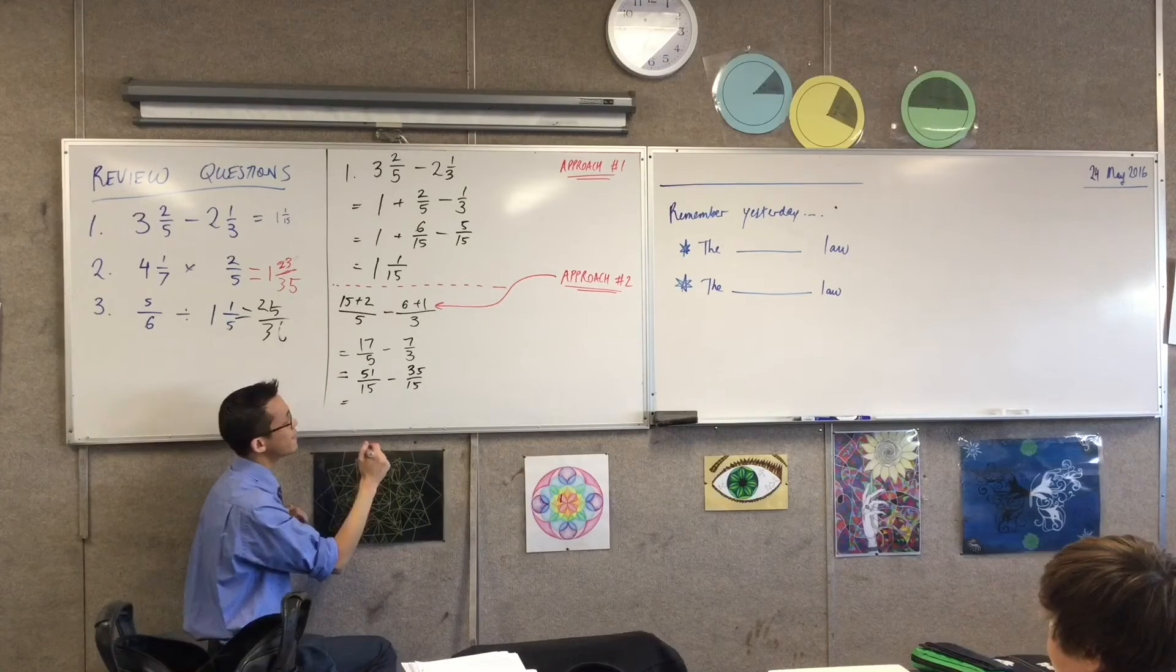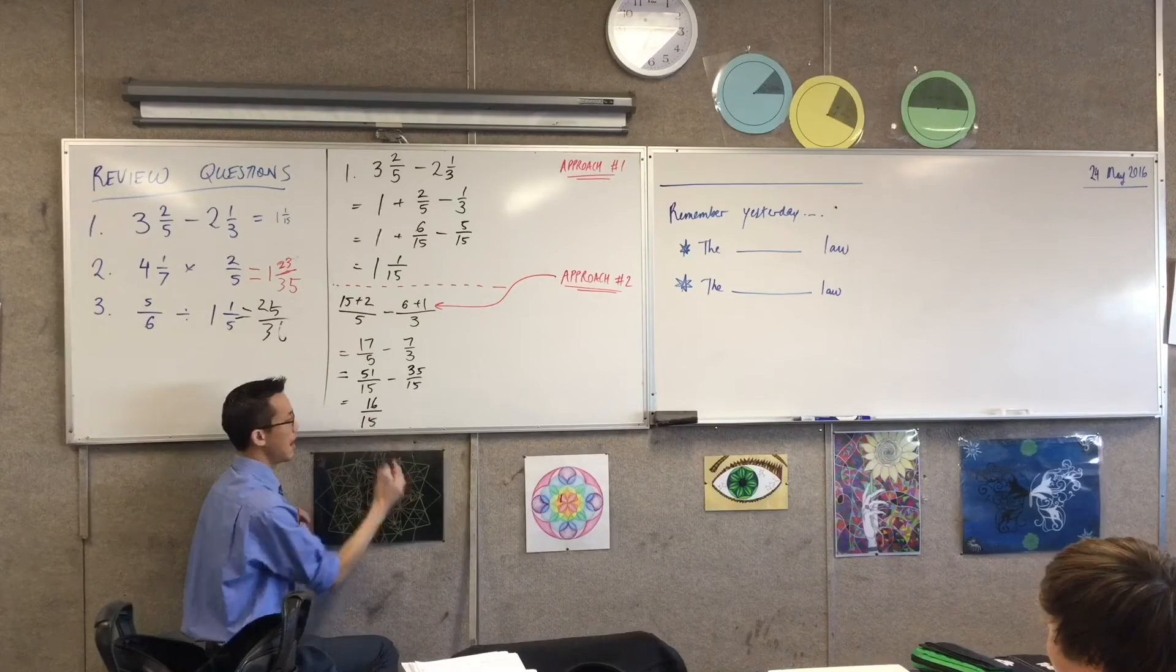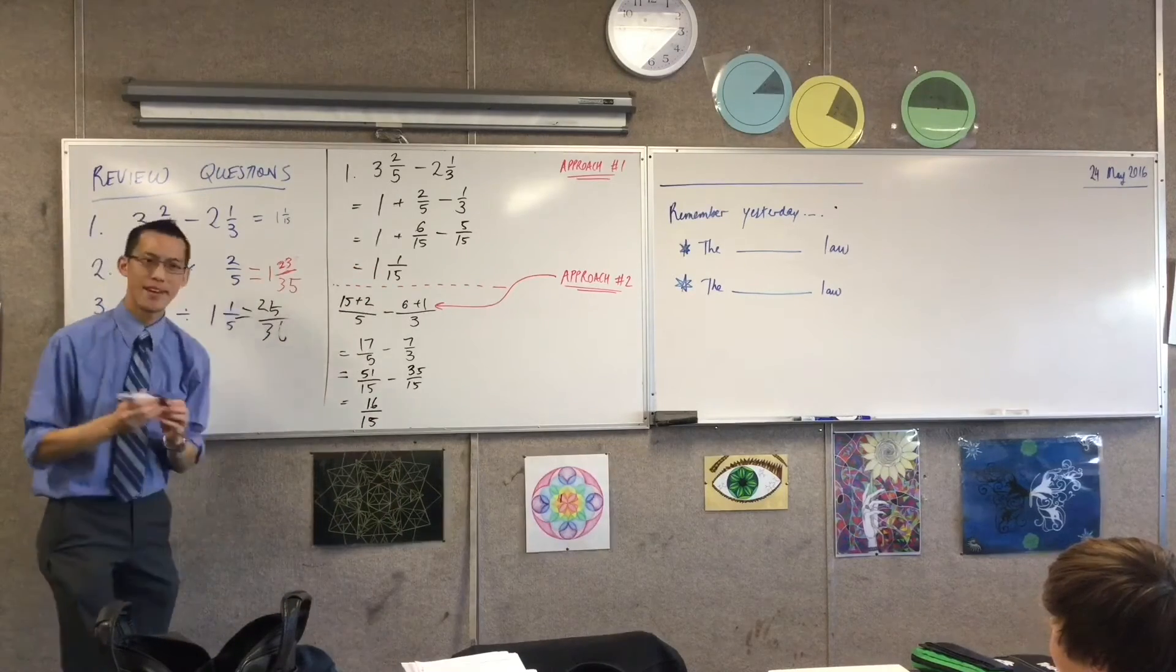Fifty-one take away thirty-five, I think that's sixteen. And you have a choice. You can either leave the answer like that or you can convert it to the mixed numeral, which is fine.